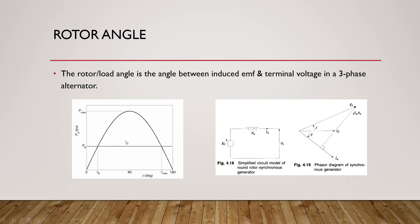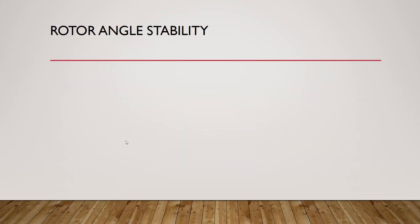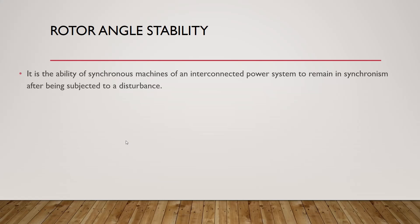We don't operate close to 90 degrees due to machine design and stability criteria — we need a large margin for our machine in case of disturbances. Rotor angle stability is defined as the ability of synchronous machines in an interconnected power system to remain in synchronism after being subjected to a disturbance. Such disturbances include a short circuit on a transmission line, a change in mechanical power, or a change in load.